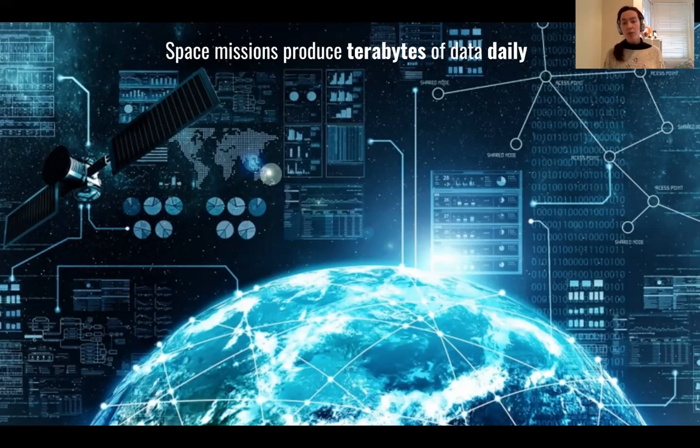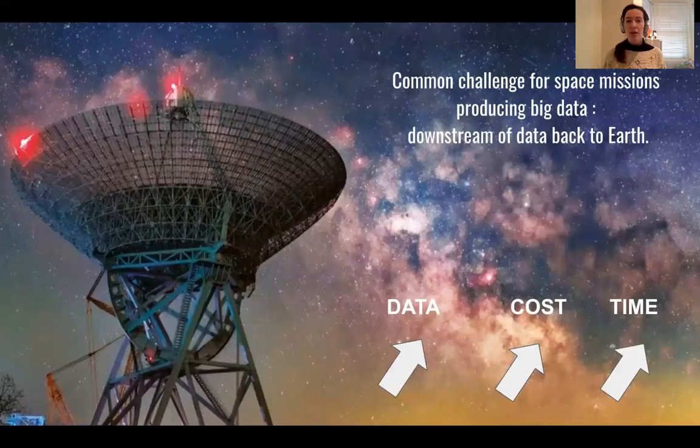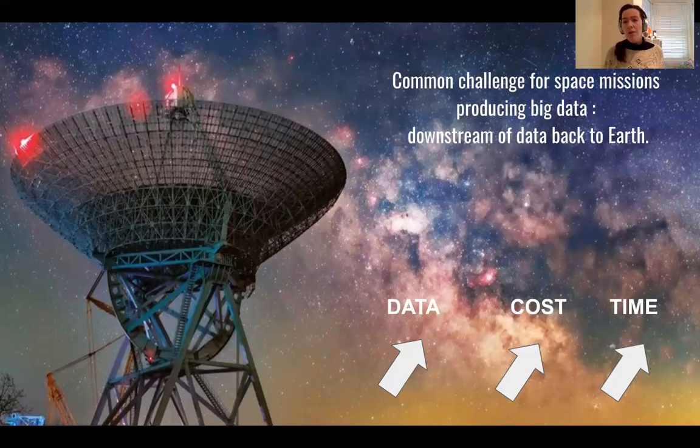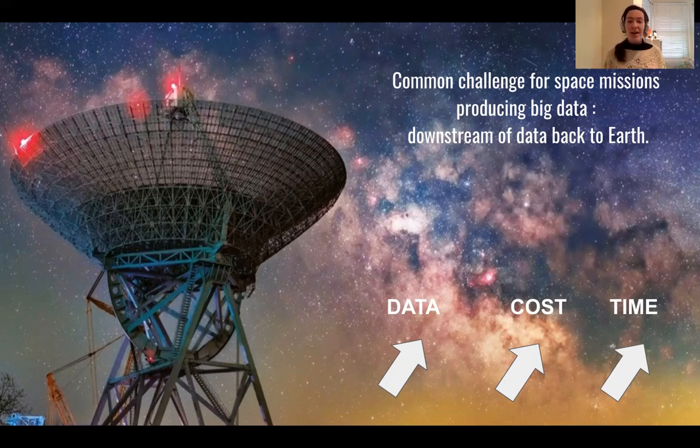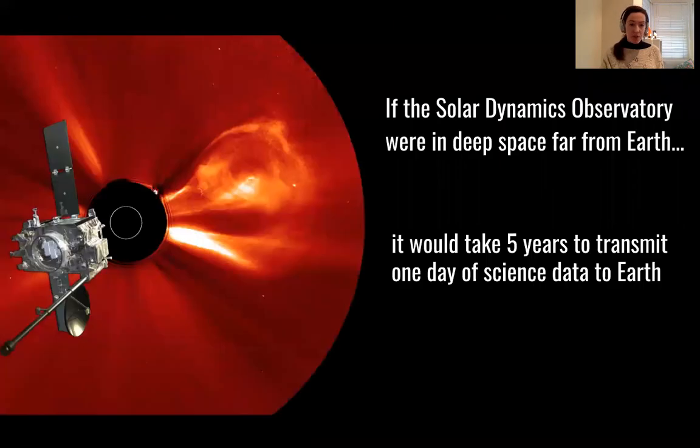And the problem when we work with these sizes of data is not just the increase in cost in transmitting this data back and analyzing them, but it's also a problem in terms of time frame. How much time do we need to actually downstream the data back to Earth? And from a quick computation, we realize that for an experiment like the Solar Dynamics Observatory, if we were deep in space, it will take about five years to transmit just one day of science back to Earth. And obviously this is simply unfeasible. We need to find alternative solutions.